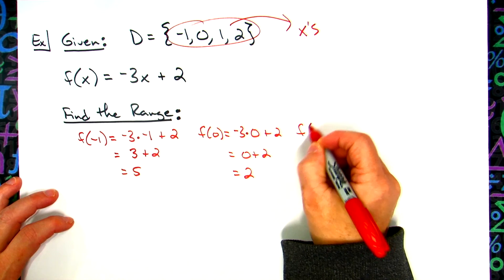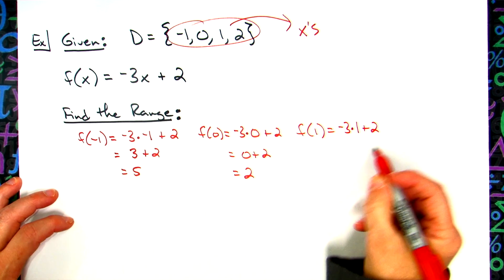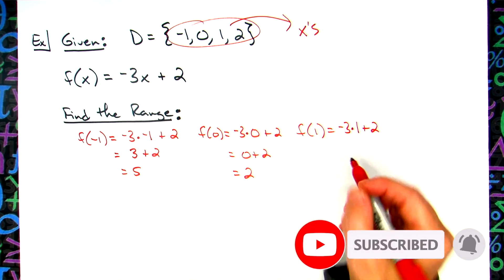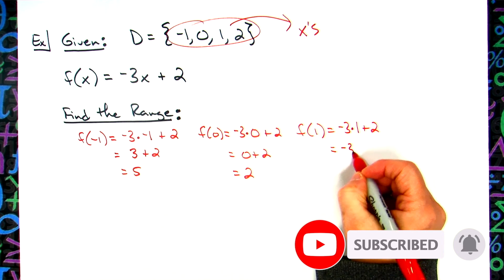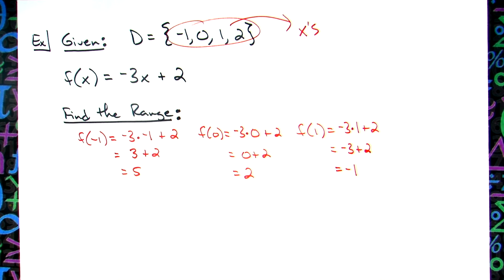I'm going to plug in f(1). Negative 3 times 1 plus 2 more? Negative 3 times positive 1 is negative 3 plus 2. That's going to give me negative 1. So there's another range number.